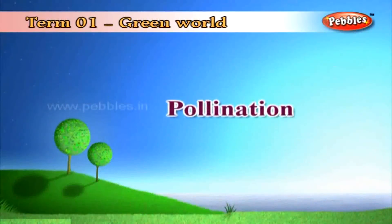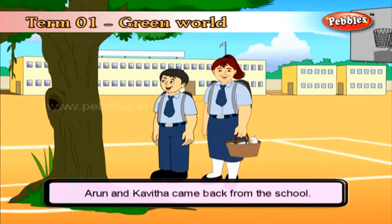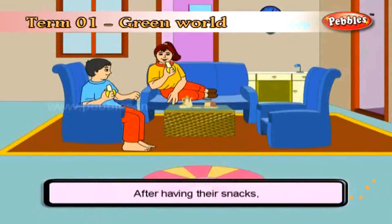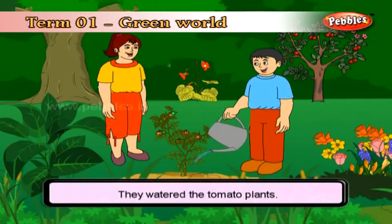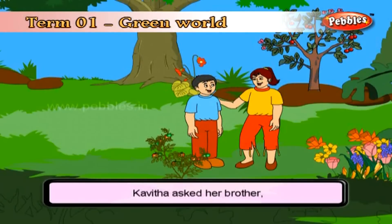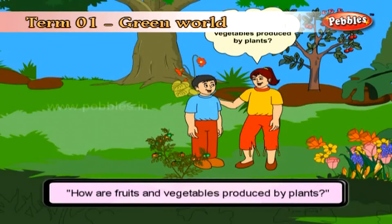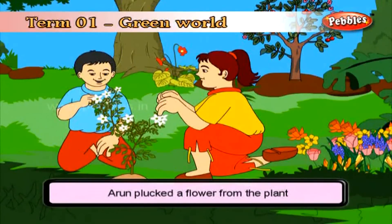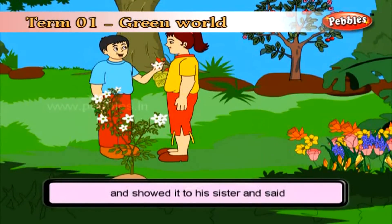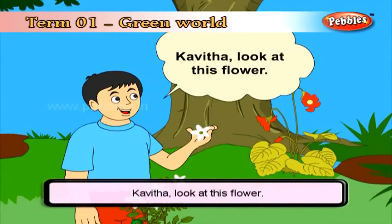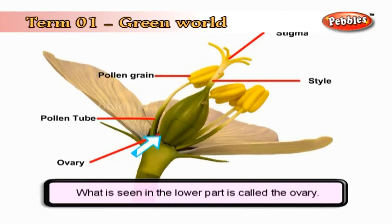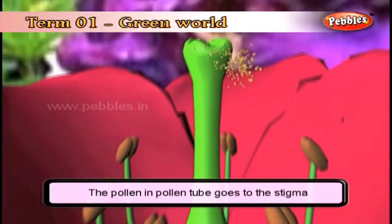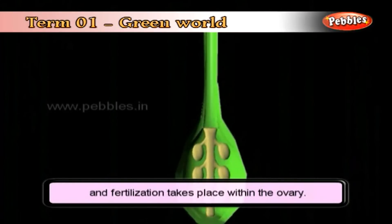The next sub-heading: Pollination. Arun and Kavitha came back from their school. After having their snacks, they went to their garden and watered the tomato plants. Kavitha asked her brother, 'How are fruits and vegetables produced by plants?' Arun plucked a flower from the plant and showed it to his sister: 'Look at this flower — this is the stigma, this is the style, and the lower part is called the ovary. The pollen grains in the anther go to the stigma and fertilization takes place within the ovary.'